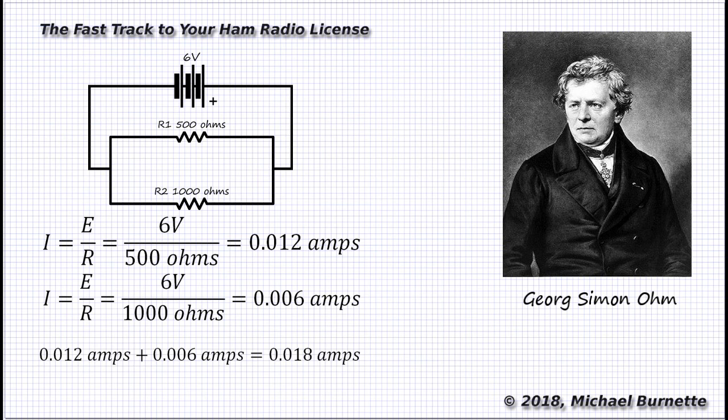Kirchhoff's Law of Current tells us that the total current in the circuit is the total through those resistors. And that total is 0.012 plus 0.006, a grand total of 0.018 amps. Now we can calculate the total resistance in this circuit. R equals E over I. So 6 volts divided by 0.018, well, what do you know? 333 ohms of resistance in this circuit.